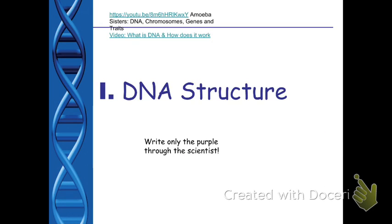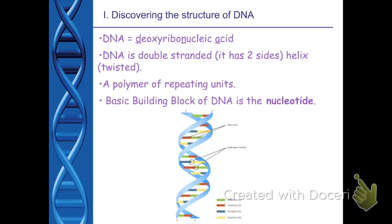Now we'll go over DNA structure — what does DNA actually look like? Most of you remember that DNA looks like a double helix. DNA stands for deoxyribonucleic acid. It is double-stranded with two sides and it's twisted. It's a polymer of repeating units. Nucleic acids are made of nucleotides, and DNA is a type of nucleic acid.